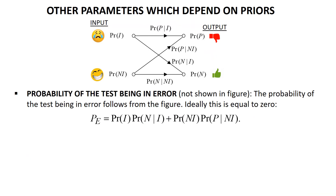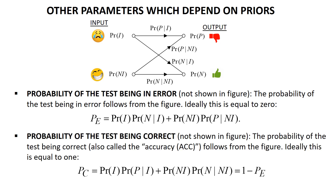Other parameters that depend on the priors: the probability of being in error is P(infected) × P(negative|infected) plus P(not infected) × P(positive|not infected) — the two diagonal paths. The accuracy is P(infected) × P(positive|infected) plus P(not infected) × P(negative|not infected) — the two horizontal paths — and it is dependent on the priors.